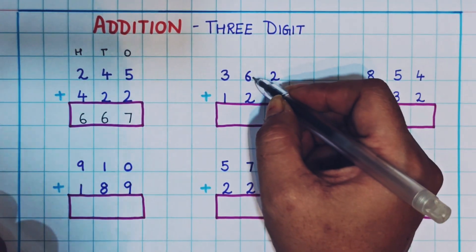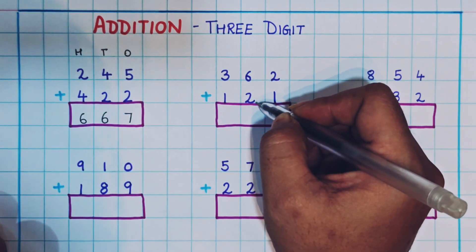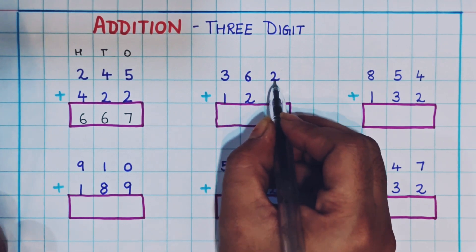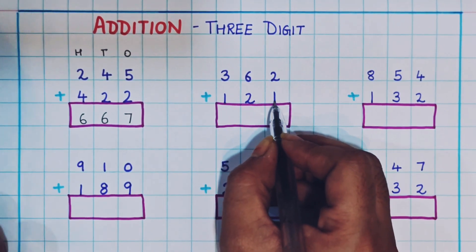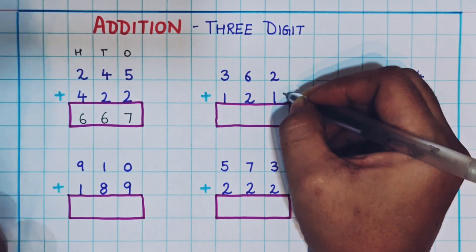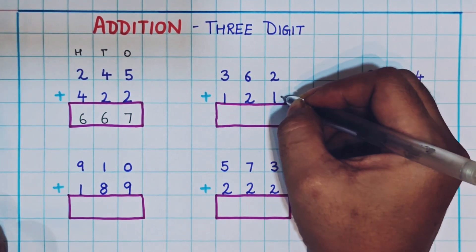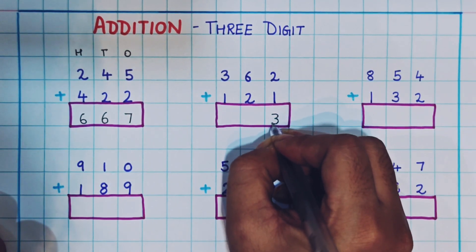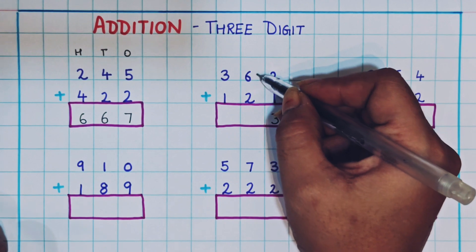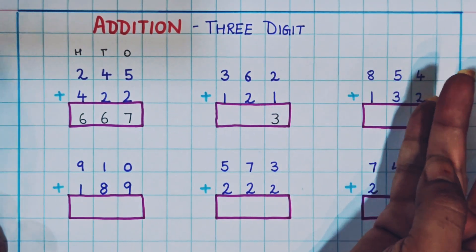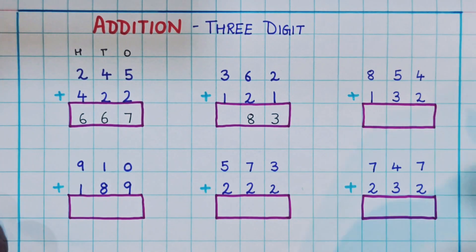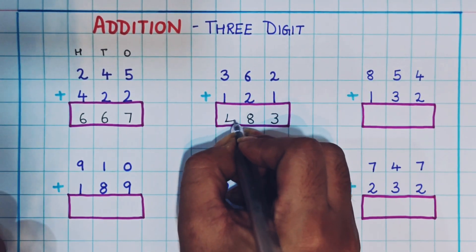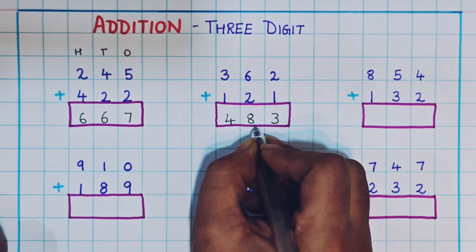Always remember: keep the bigger number in your mind and then add the smaller number. Now let's see the next one: 362 plus 121. Again we will do the addition from the ones place. 2 plus 1 is 3, so here I will write 3. Then 6 plus 2: 6 in the mind, 7, 8 — here I will write 8. Next, 3 plus 1: 3 in the mind plus 1 is 4. So the answer is 483.